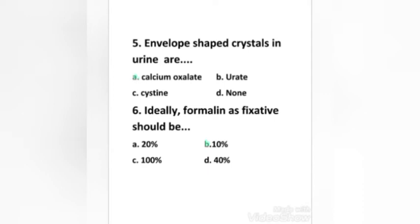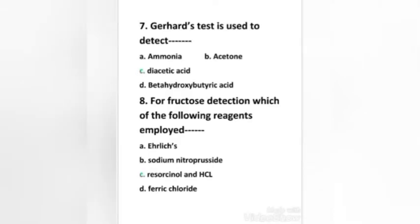Ideally formalin as a fixative should be: 20%, 10%, 100%, or 40%. Ideally formalin as a fixative is used at a concentration of 10%.